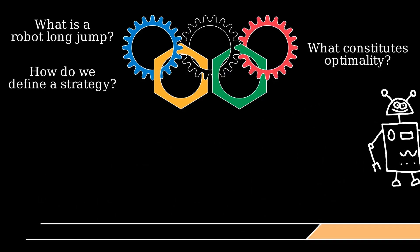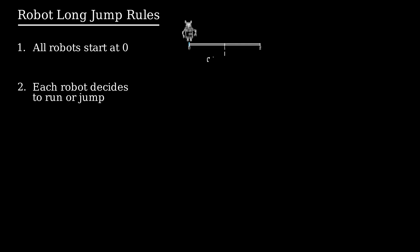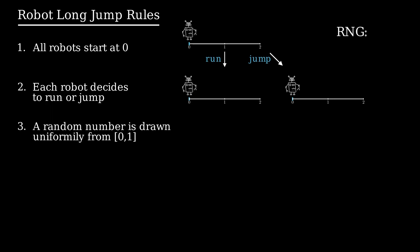Let's jump into things by laying some ground rules. All robots start at zero on the number line. For each move, the robot decides if it wants to run down the runway or jump from its current position. In both cases, a random uniform variable is drawn from the unit interval.